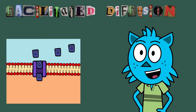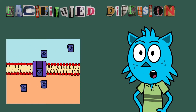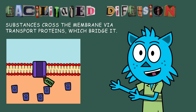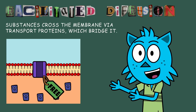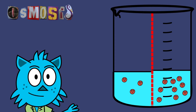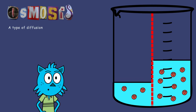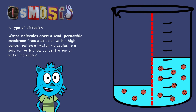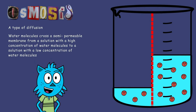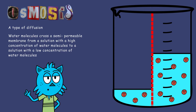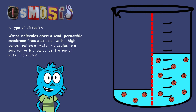Facilitated diffusion is similar to simple diffusion, but substances cross the cell membrane via transport proteins, which bridge it. Lastly, there's osmosis, which is a type of diffusion in which water molecules cross a semi-permeable membrane from a solution with a high concentration of water molecules to one with a low concentration of water molecules.